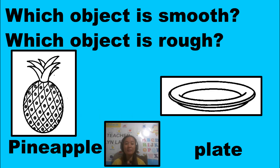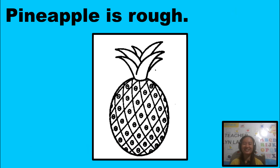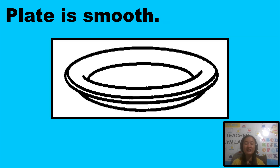Next, how about this one? Which object is smooth, which object is rough? Is it a pineapple or the plate? You try to think. Yes, you're correct — pineapple is rough and plate is smooth. Wow, you did a great job! So, those are examples of smooth and rough objects.